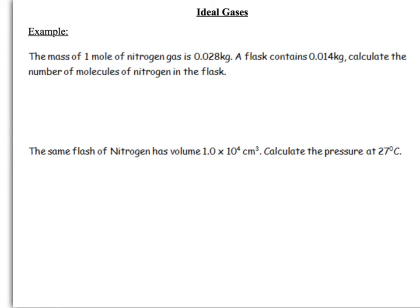We've got one mole of nitrogen gas is 0.028 kilograms. And we've got a flask containing 0.014 kilograms. I'll ask you to calculate the number of molecules in the flask. So, the first stage is to work out the number of moles.